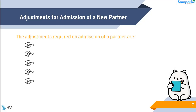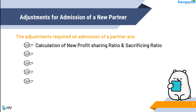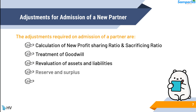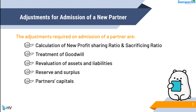The adjustments required on admission of a partner are: calculation of new profit sharing ratio and sacrificing ratio, treatment of goodwill, revaluation of assets and liabilities, reserve and surplus, and partners' capitals.